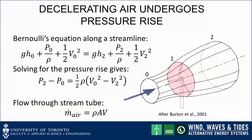The airflow is decelerating through the wind turbine as there is a reduced velocity downstream. A decelerating flow undergoes a pressure rise, which we can calculate using Bernoulli's equation for flow along a streamline. In Bernoulli's equation on a per-unit mass basis, the first term is potential energy, the second is pressure force, and the third is kinetic energy. For a wind turbine, changes in potential energy can be neglected. Solving for the pressure rise gives an expression related to the change in kinetic energy: v0 squared minus v2 squared.